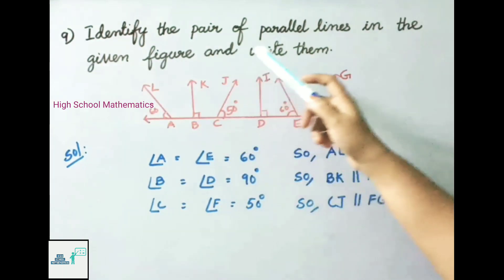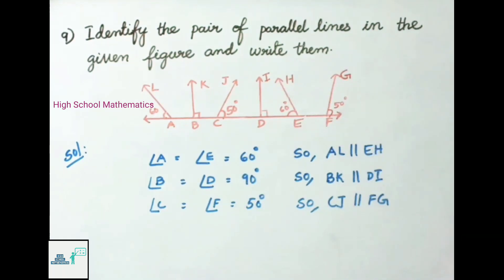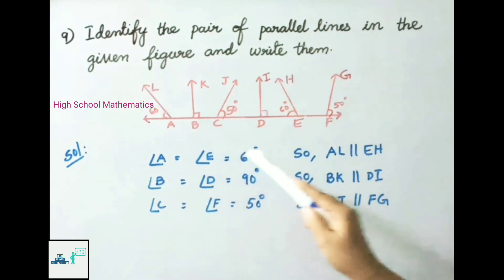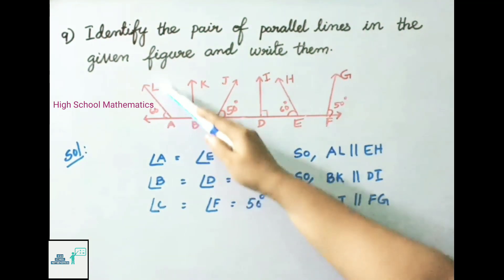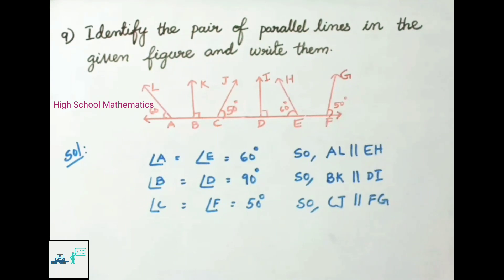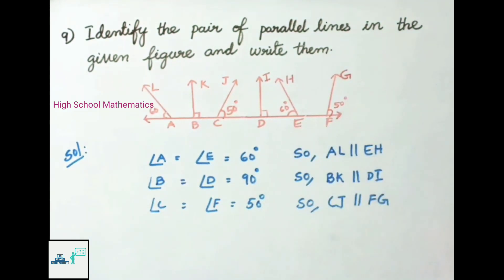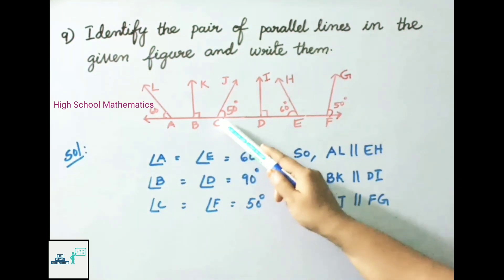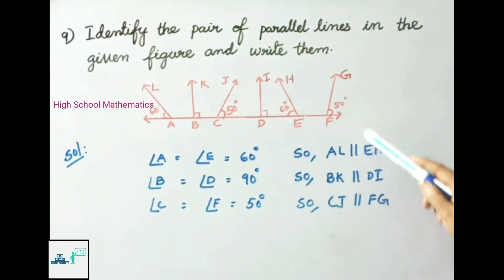Question number 9: Identify the pair of parallel lines in the given figure. Angle A and angle E both equal 60 degrees, so AL is parallel to EH. Angle B and angle D both equal 90 degrees, so BK is parallel to DI. Angle C and angle F both equal 50 degrees, so CJ is parallel to FG.